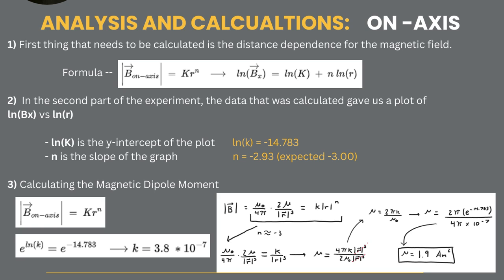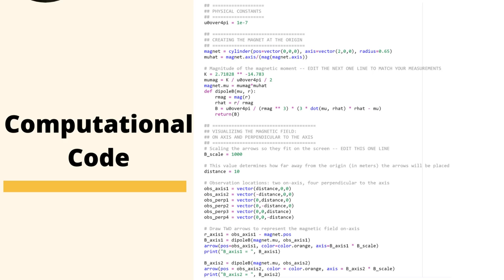Now the computational code. This right here we're just creating a function to do the magnitude of magnetic moment, constants as well.